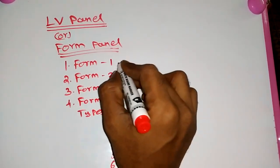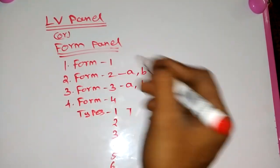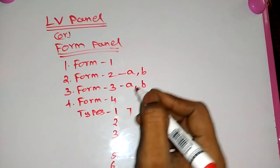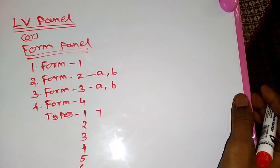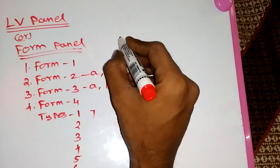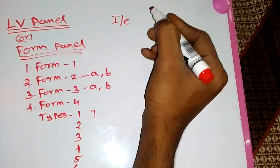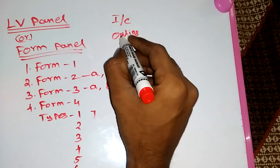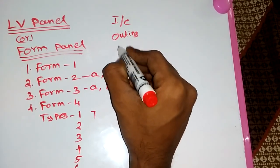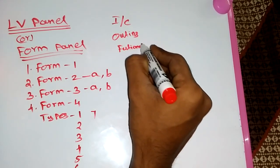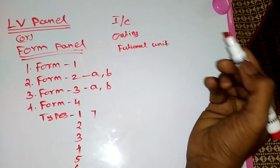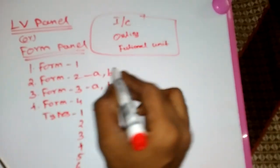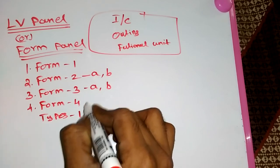Now we are going to look at how they are differentiated from each other — why we call them Form 1, Form 2, Form 3, and Form 4. First of all, we consider three things for an LV panel: the first one is Incoming, the second one is Outgoing, and the third one is Functional Unit.